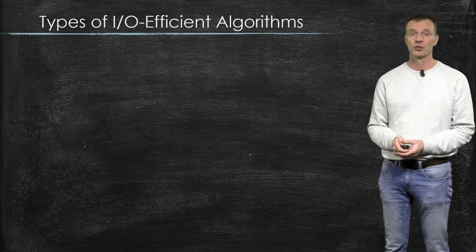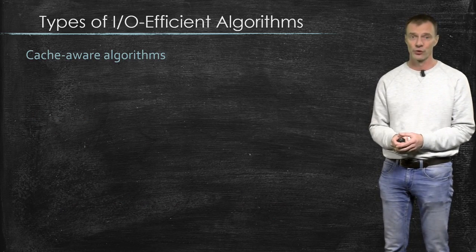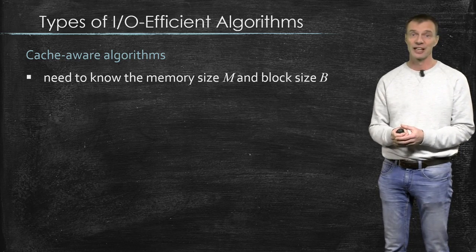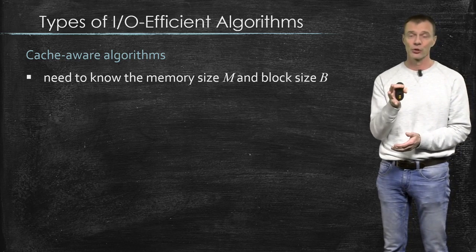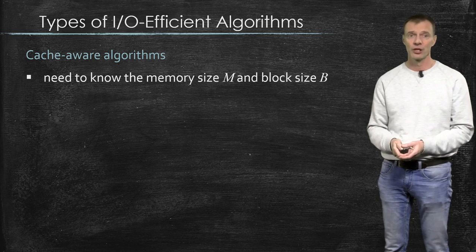So what are these two types? First of all we have what are called the cache-aware algorithms. For cache you could also read internal memory. So these algorithms, they are aware of, first of all, the size of the internal memory, and secondly the block size.